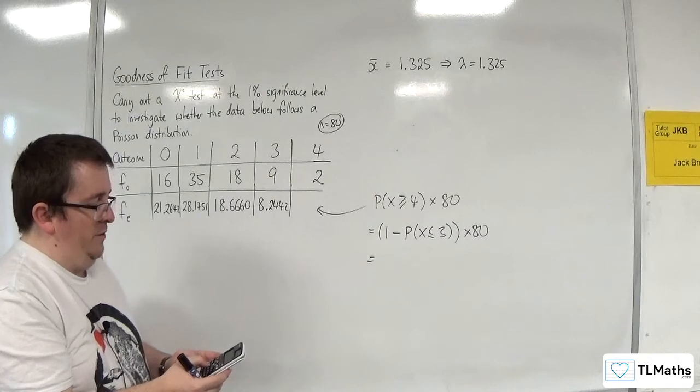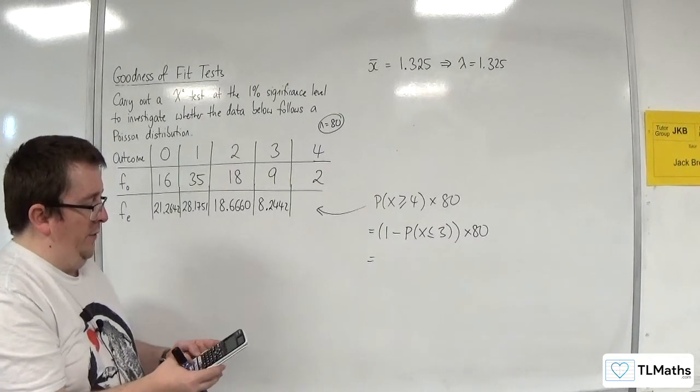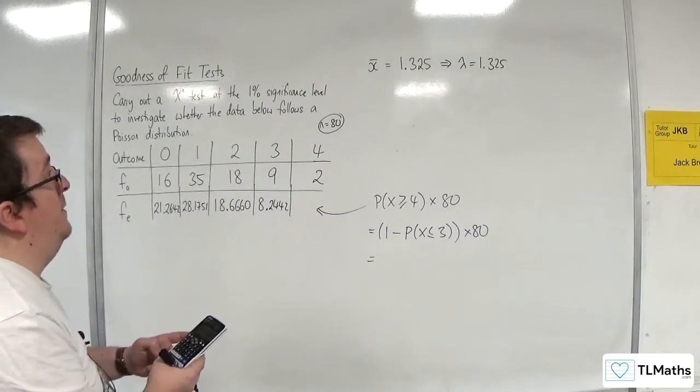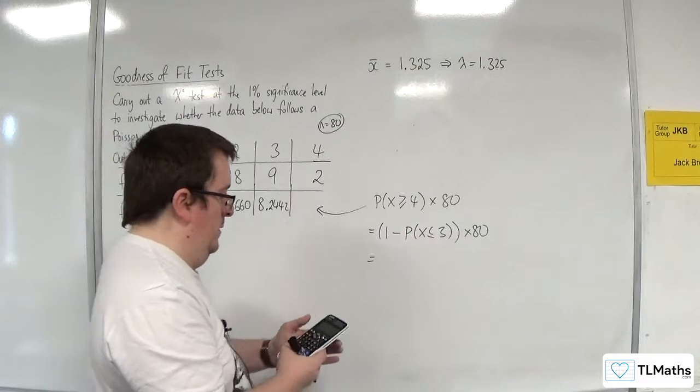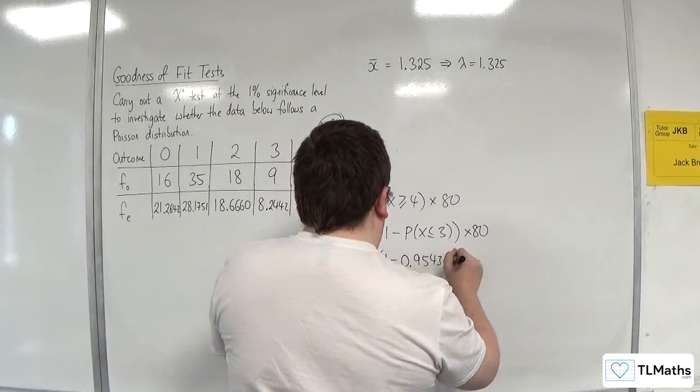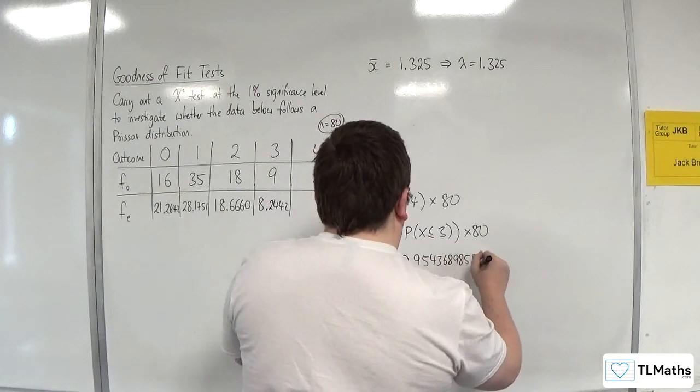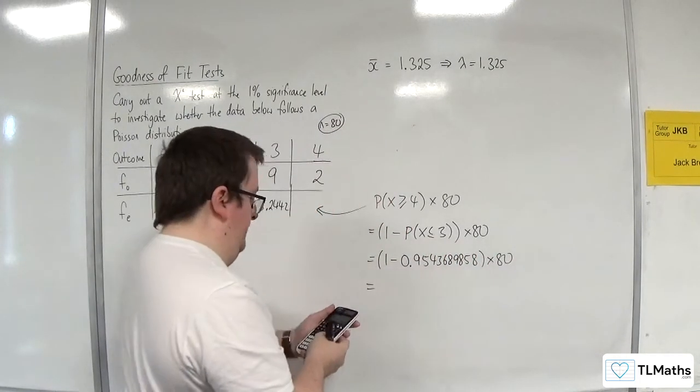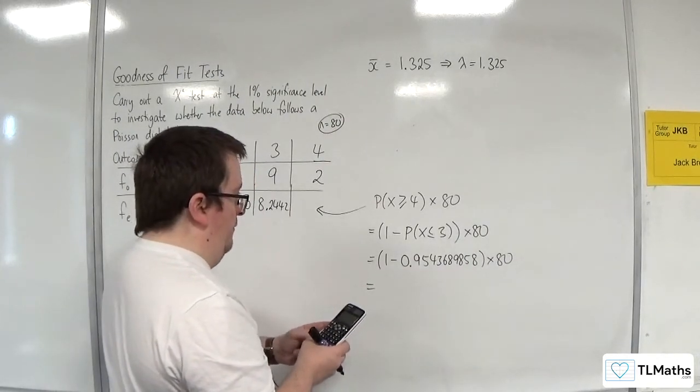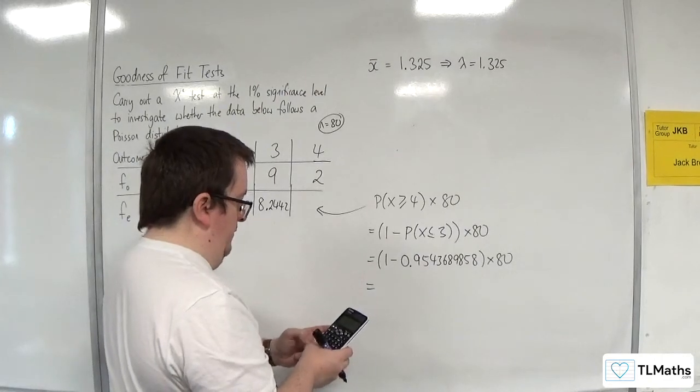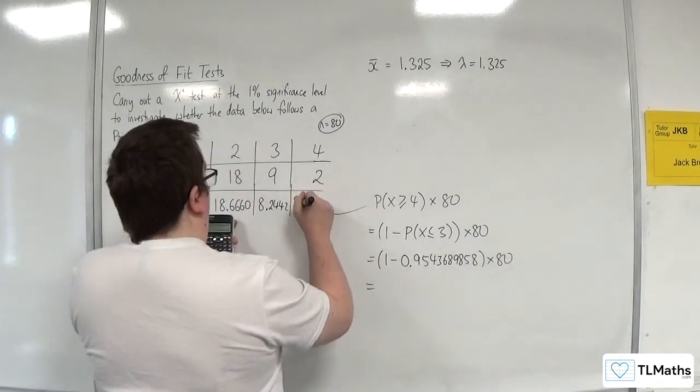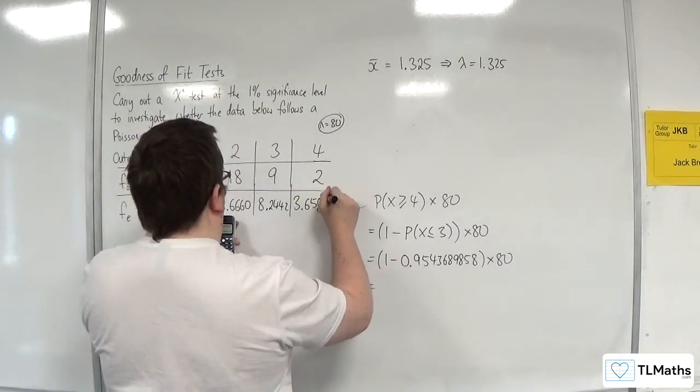So I'm going to go to menu number 7, Poisson CD, variable x is 3, lambda as 1.325. So 1 takeaway 0.95436898585, times by 80, and we're getting 3.6505.